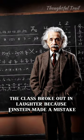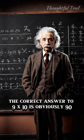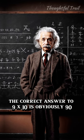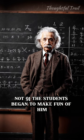The class broke out in laughter because Einstein made a mistake. The correct answer to 9x10 is obviously 90, not 91, and the students began to make fun of him.